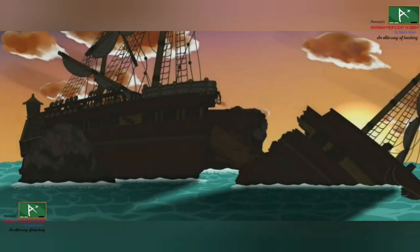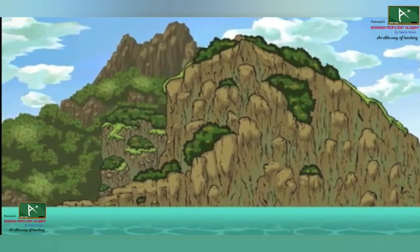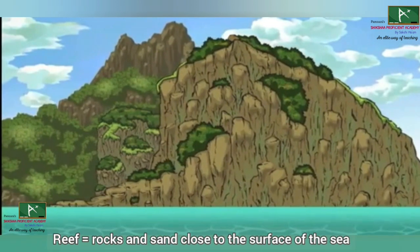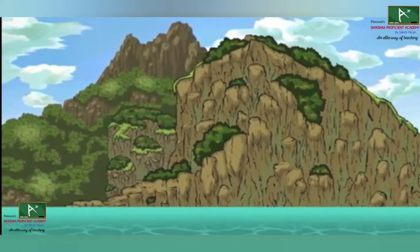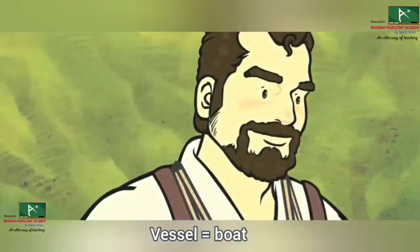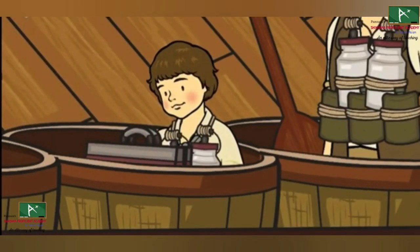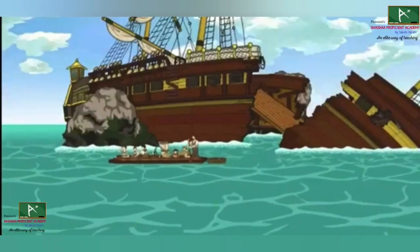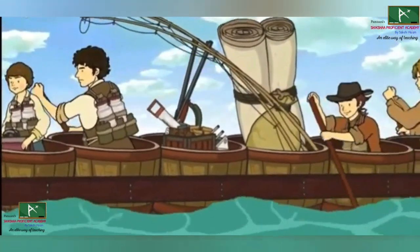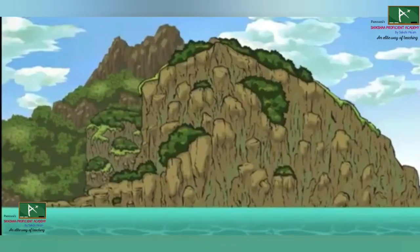After surviving the night, the family sees a tropical island ahead. So they decided to get to the island beyond the reef — that is, rocks and sand close to the surface of the sea. With much effort, the family constructed a vessel, i.e. a boat, out of tubs. They filled the boat with food, ammunition, and all other articles of value they could safely carry. Then they rode towards the island, with two dogs from the ship named Turk and Juno swimming along beside them.